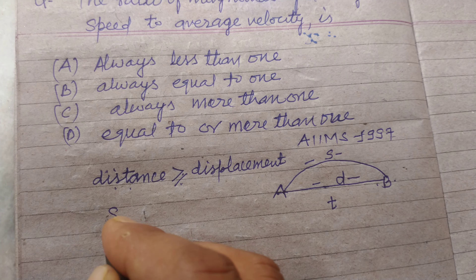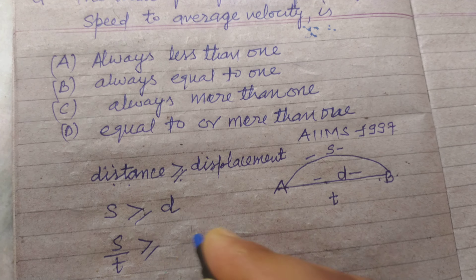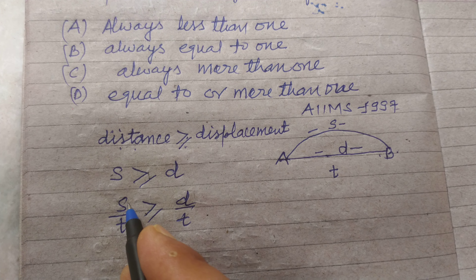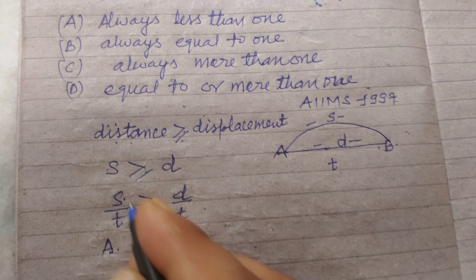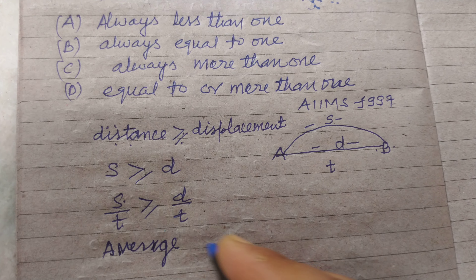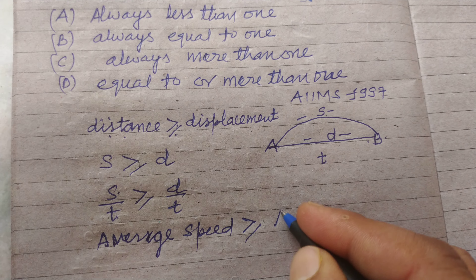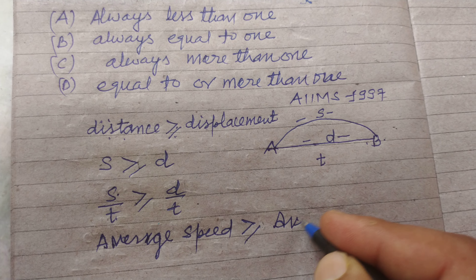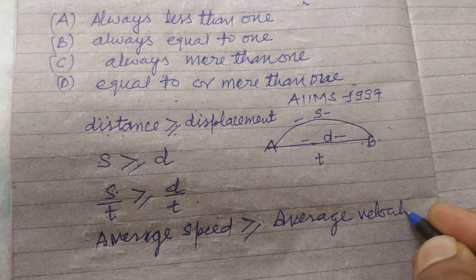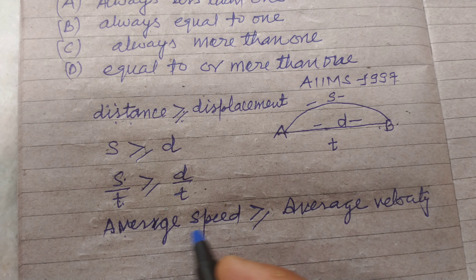Dividing by time T: S is greater than or equal to D, so S over T is greater than or equal to D over T. Distance upon time is average speed, and displacement upon time T is called average velocity. So average speed is greater than or equal to average velocity.